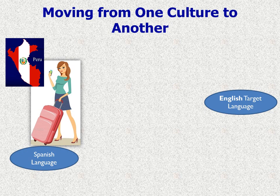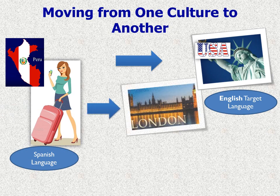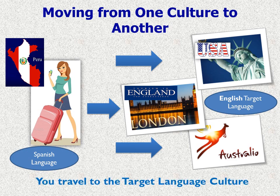Let's suppose that I am from Peru and my mother tongue is Spanish. In order to improve my English language, I can travel to the USA, to England, or to Australia. Why? Because these three countries speak English — that is the target language I want to acquire.